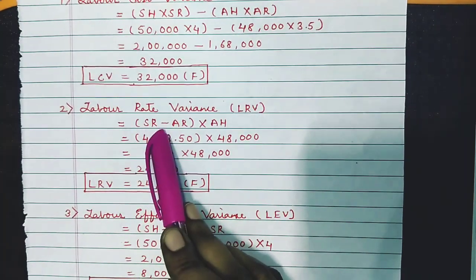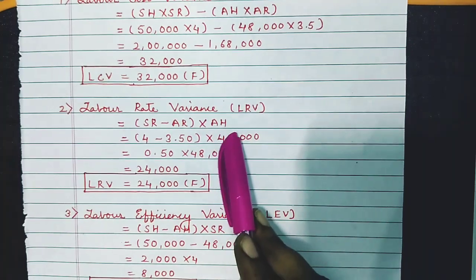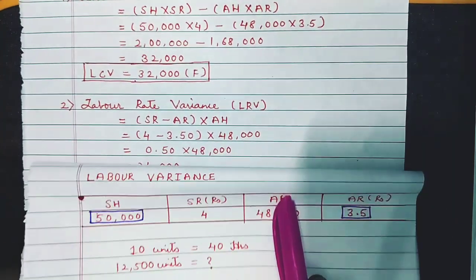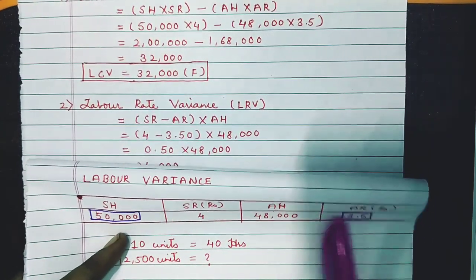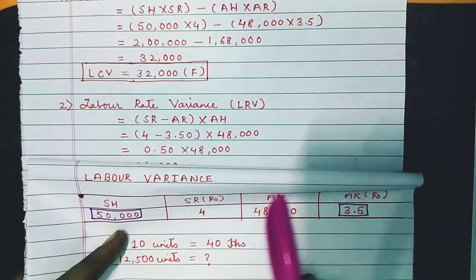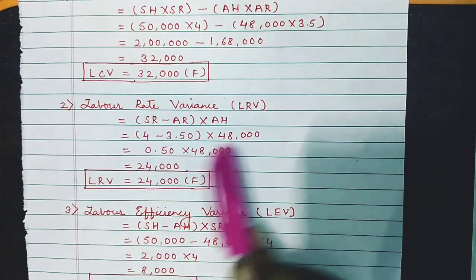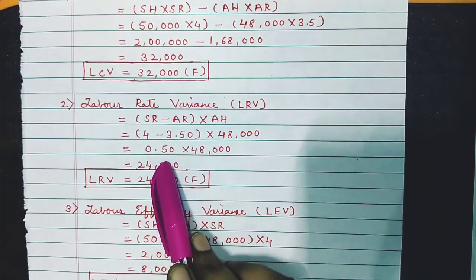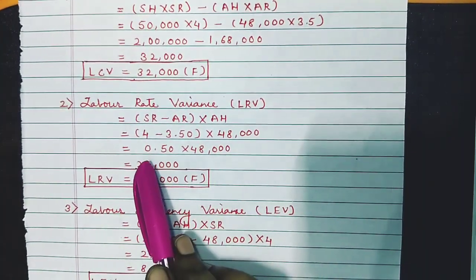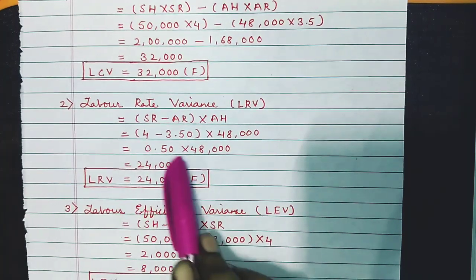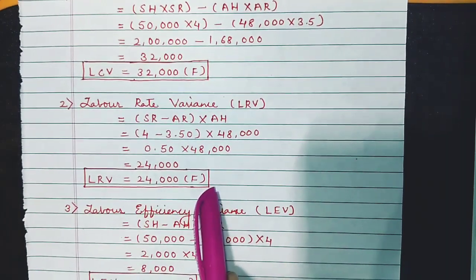Labor Rate Variance (LRV) formula: (Standard Rate − Actual Rate) × Actual Hours. Standard rate is 4, actual rate is 3.5, actual hours is 48,000. So: (4 − 3.5) × 48,000 = 0.50 × 48,000 = 24,000. The answer is positive, so LRV = 24,000 Favorable.